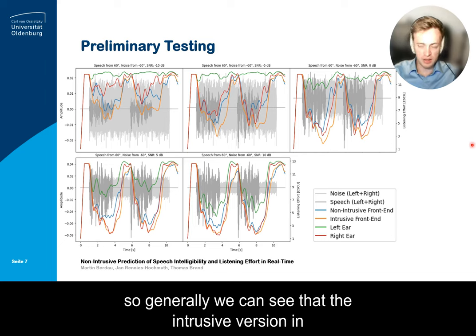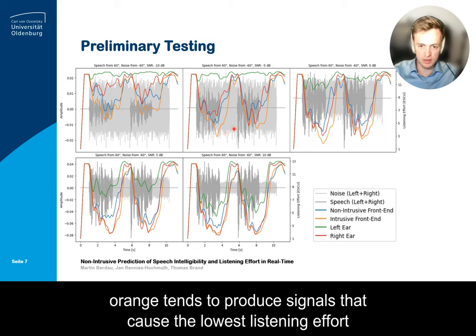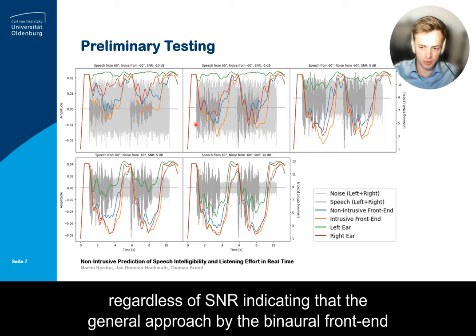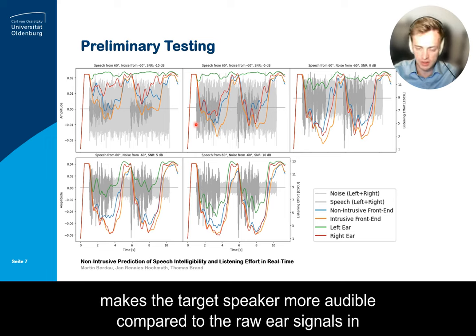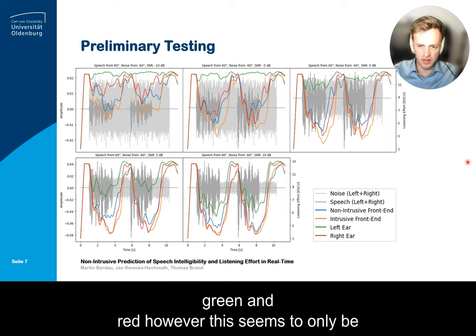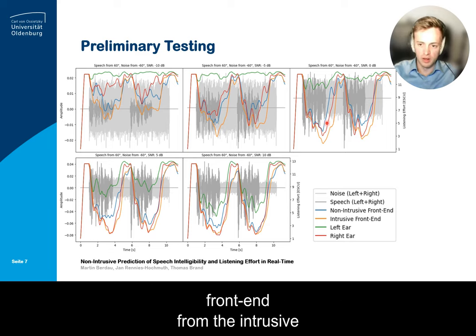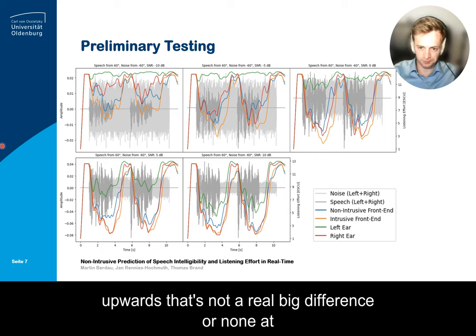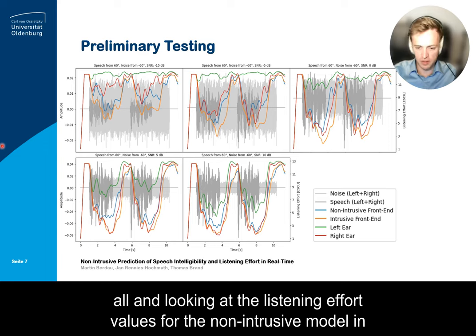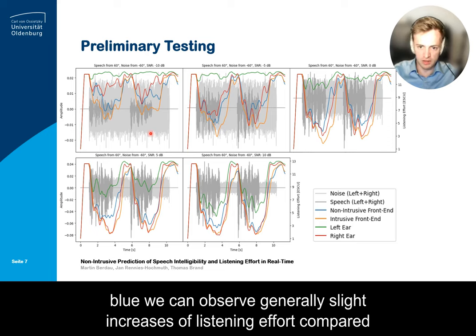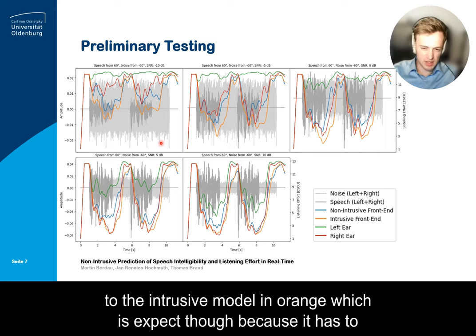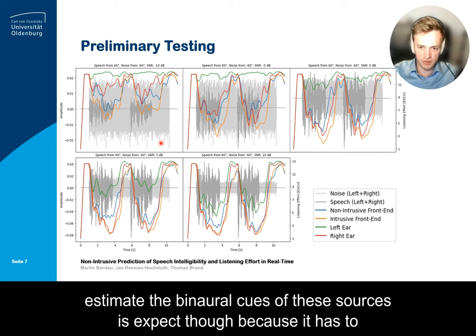Generally, we can see that the intrusive version in orange tends to produce signals that cause the lowest listening effort regardless of SNR, indicating that the general approach of the binaural front end makes the target speaker more audible compared to the raw ear signals in green and red. However, this seems to only be true for low SNR conditions — comparing the listening effort of the right ear with the intrusive front end from 0 dB SNR upwards, there is not a meaningful difference. The non-intrusive model in blue shows generally slight increases in listening effort compared to the intrusive model, which is expected because it has to estimate the binaural cues of the sources from the mixture of speech and noise.